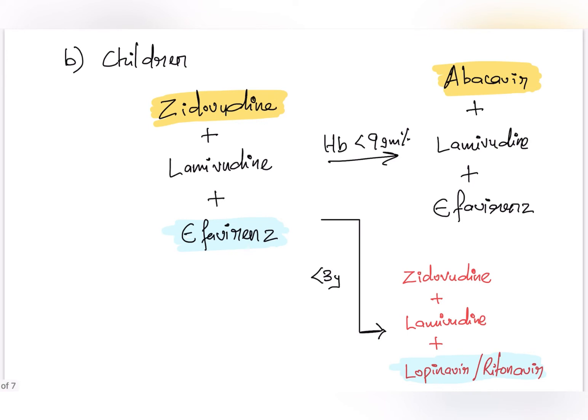In case of children, the combination of zidovudine, lamivudine, and efavirenz is used. And if the child is less than 3 years of age, then instead of efavirenz, lopinavir or ritonavir is used. And if the patient has hemoglobin less than 9g%, then zidovudine is replaced by abacavir.